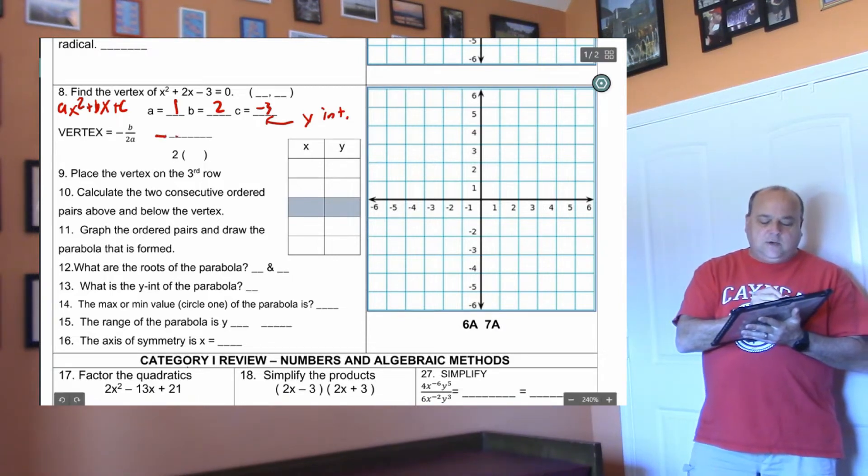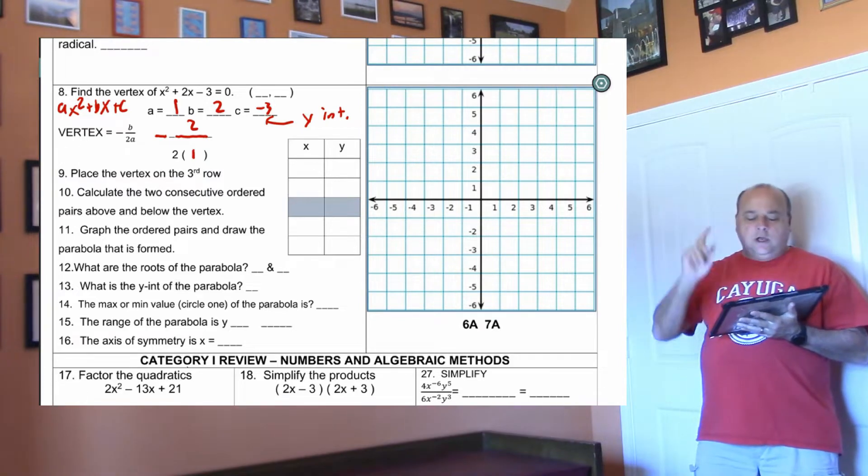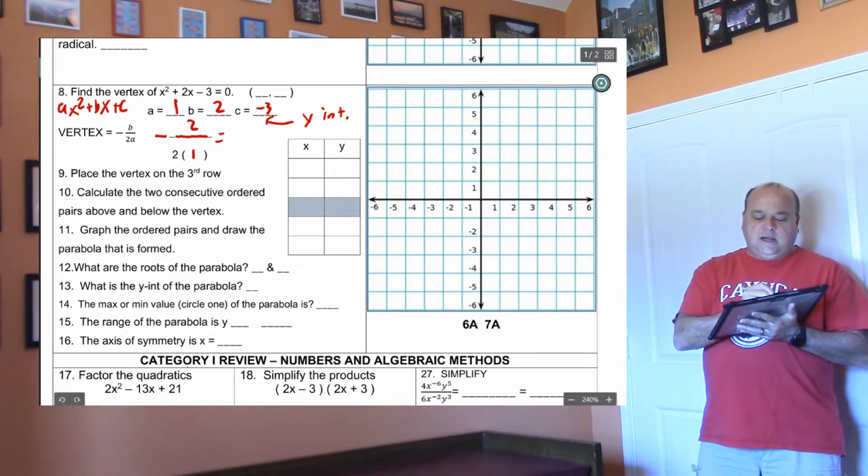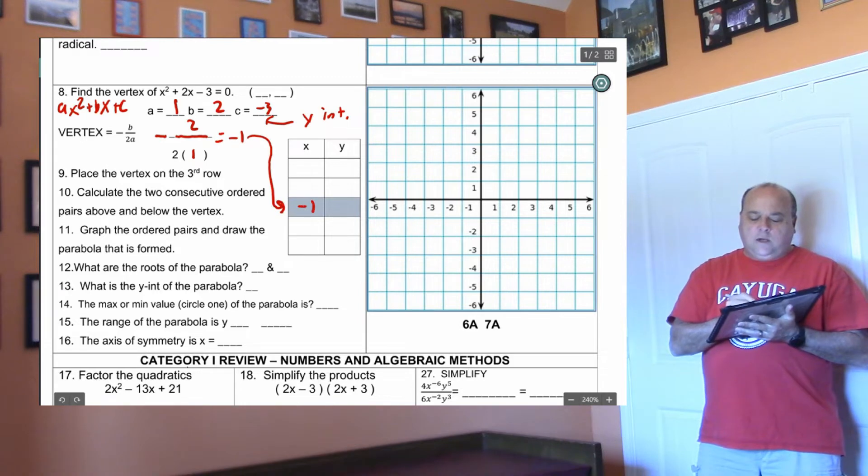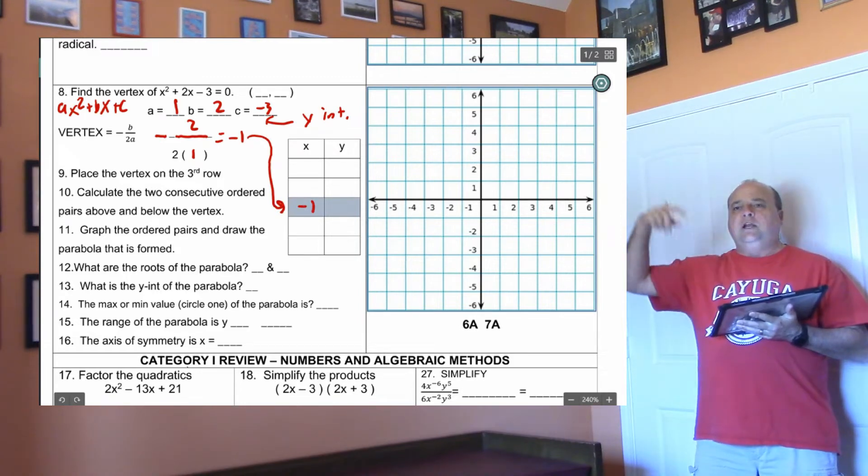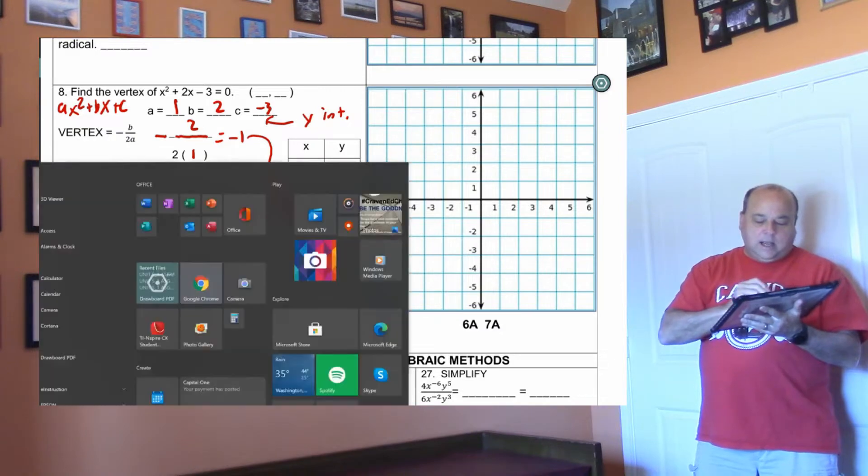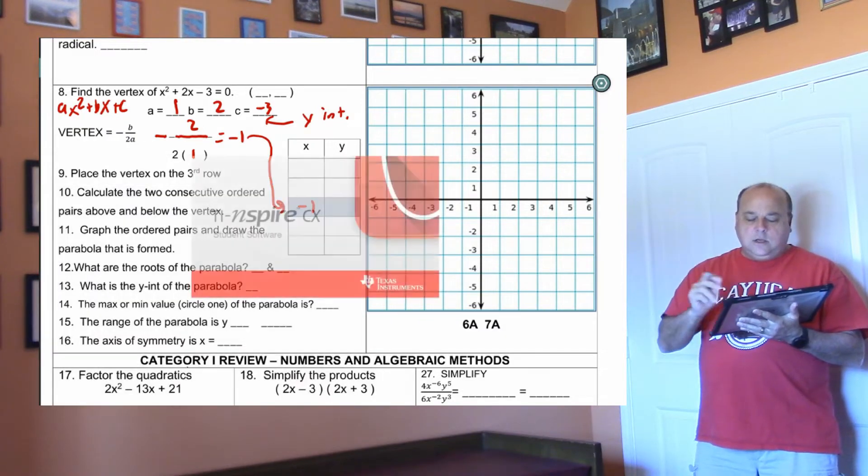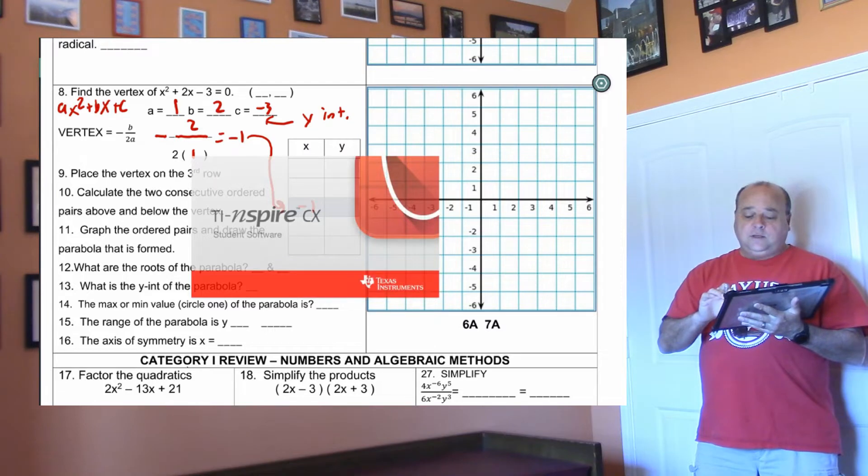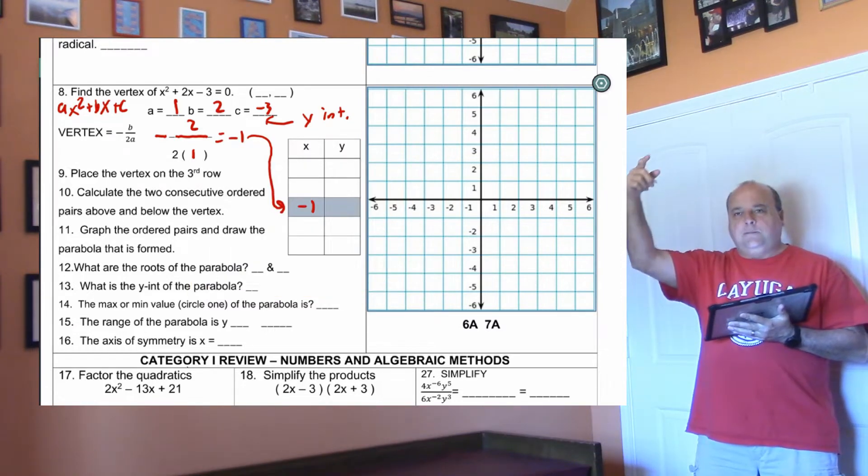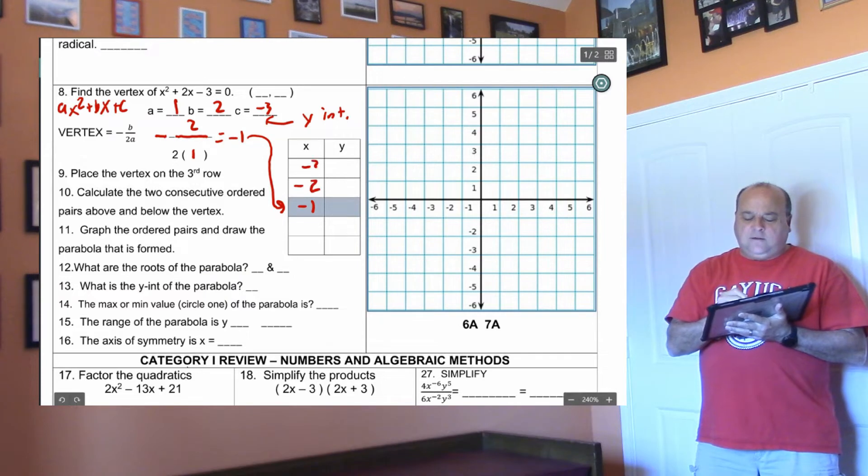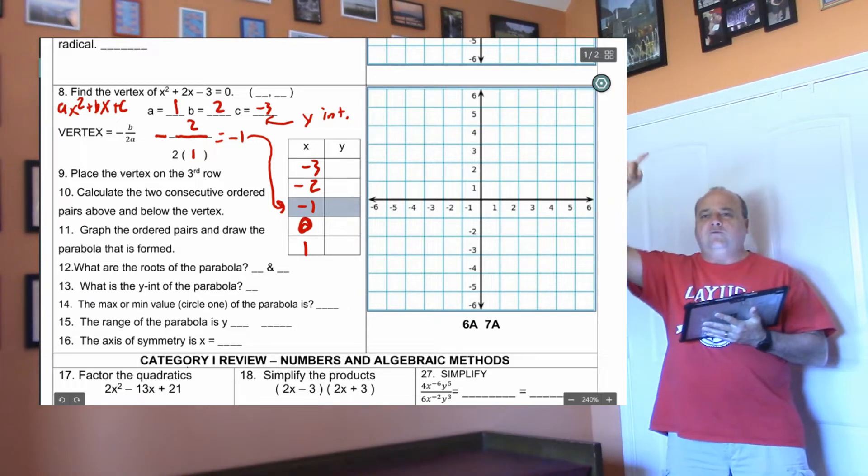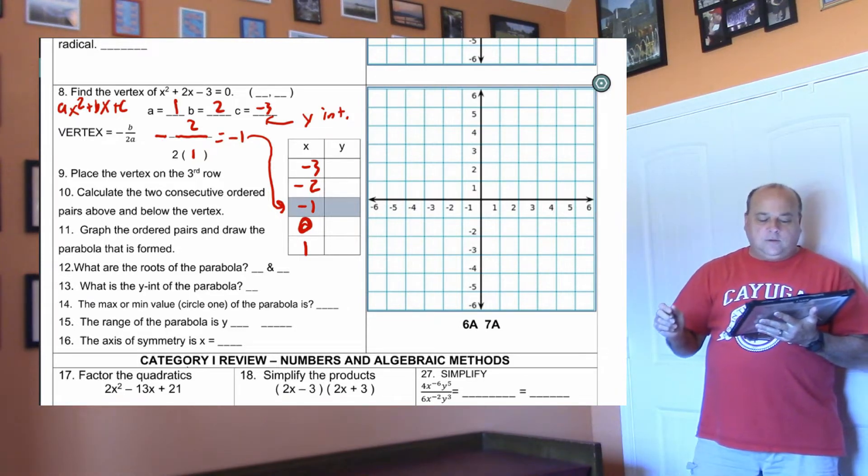Now then, to find the vertex, we're going to do negative fraction bar, and we're going to put b over 2a. So b is two, a is one. Notice there's one negative here. So two divided by two is negative one, and that negative one went right here. So we need two dots above it and two dots below it. While I'm doing this, let me turn the calculator on. So I need two dots above the negative one, which will be negative two, negative three, two dots below it, zero, one. I like having my table of values go from small to big.